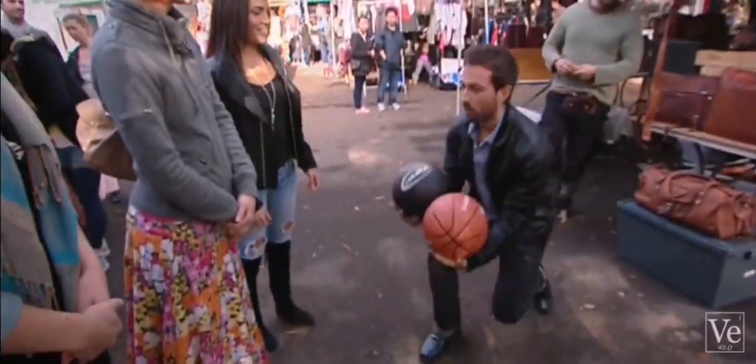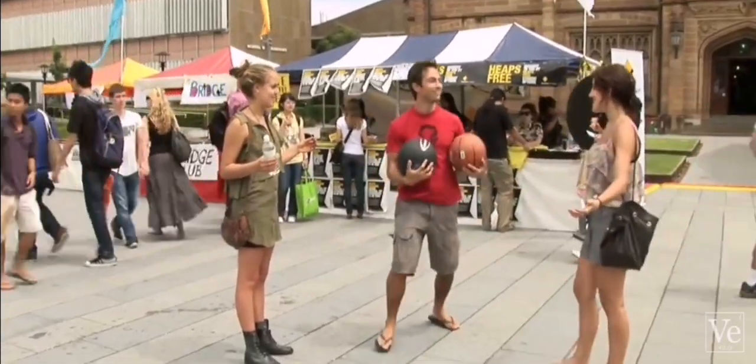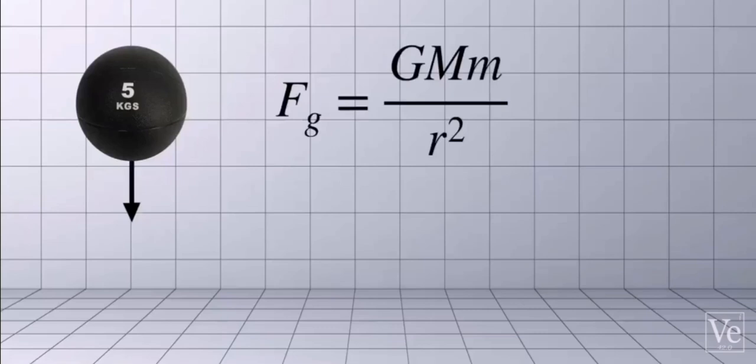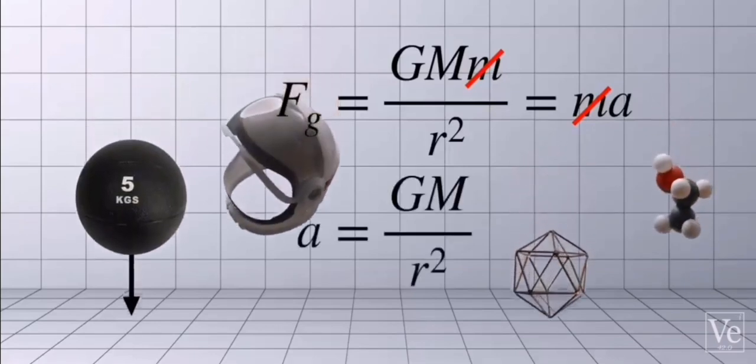Now, I have made a number of videos on this topic, and I would always give the standard Newtonian explanation. The only force on a free-falling body is its weight, GMm on r squared, which equals its mass times acceleration. You can cancel the object's mass on both sides of the equation. Hence, all objects will have this same acceleration.